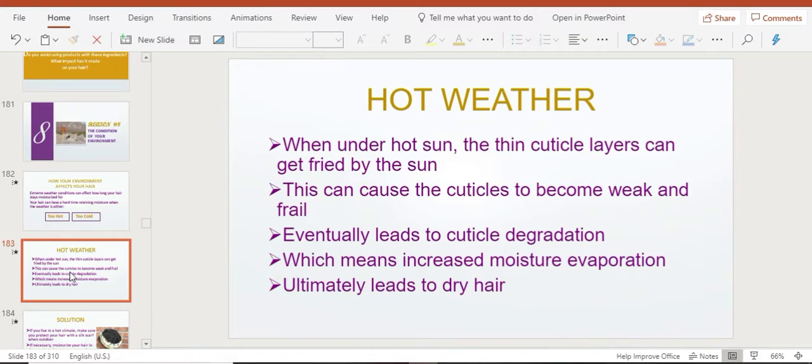Unfortunately, there is no sun blocking cream like a sunscreen for the hair, even though shea butter works very well as a natural sun block for our hair. When your cuticles get fried and baked under the sun, it's going to weaken them and eventually lead to cuticle degradation, meaning you're going to lose those layers of your cuticles. As a result, moisture evaporation will happen at a much faster rate, meaning dry hair.